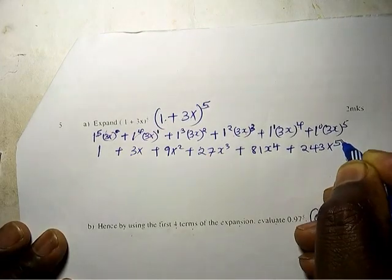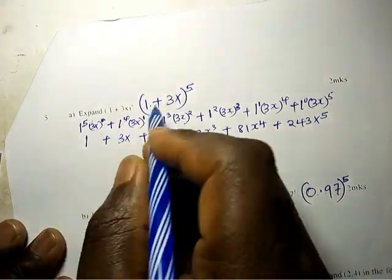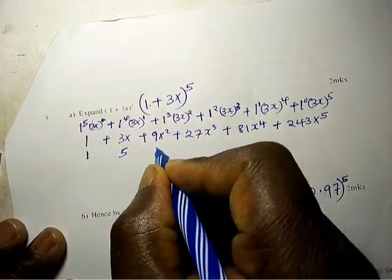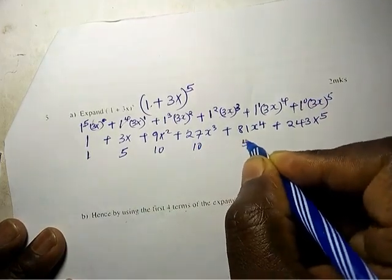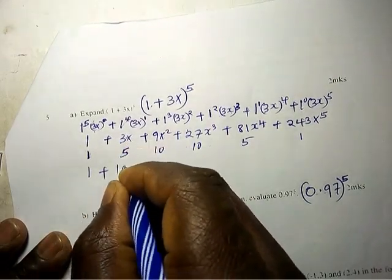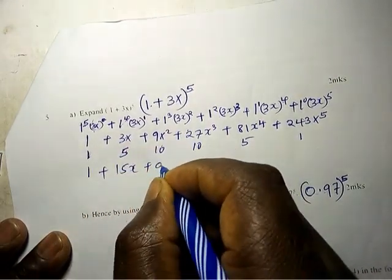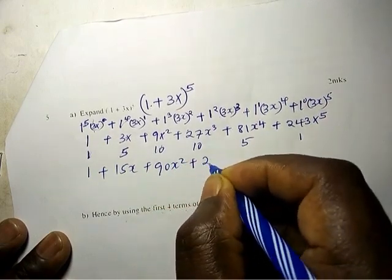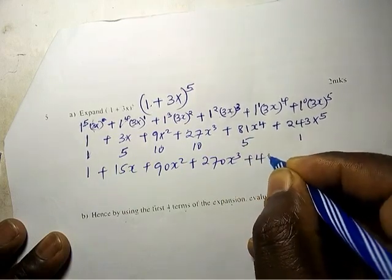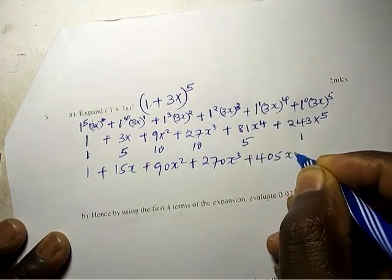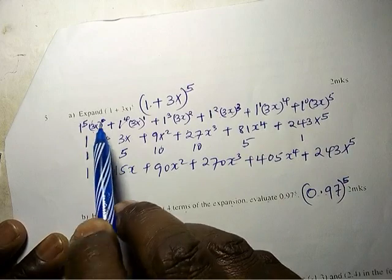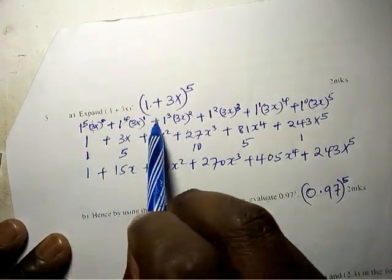...243x^5. Now the coefficients are 1, 5, 10, 10, 5, 1. So this is going to be 1 + 15x + 90x^2 + 270x^3 + 405x^4 + 243x^5.